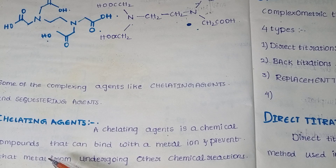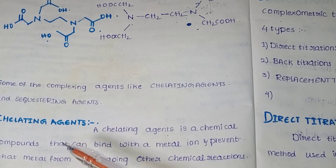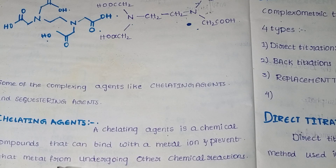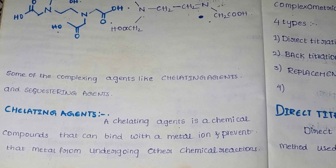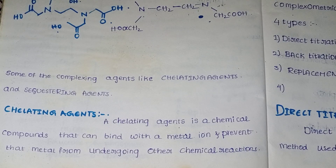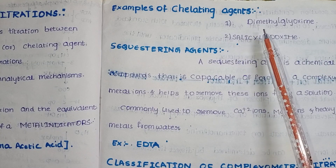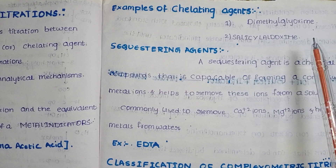Metal ions react with either complexing agents or chelating agents. A chelating agent is a chemical compound that can bind with a metal ion and prevent that metal from going into other chemical reactions. Examples of chelating agents are dimethylglyoxime and salicylaldoxime.